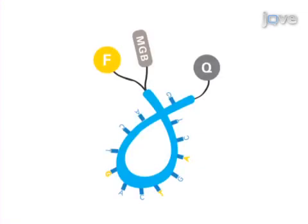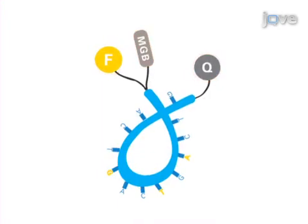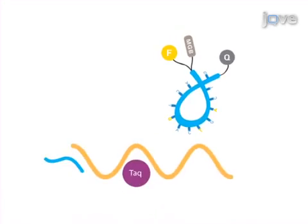The Solaris probe has a minor groove binder moiety and FAM reporter on the 5' end and an Eclipse dark quencher at the 3' end. During the denaturation step of real-time PCR, the probe remains in solution and the FAM reporter fluorescence is quenched.